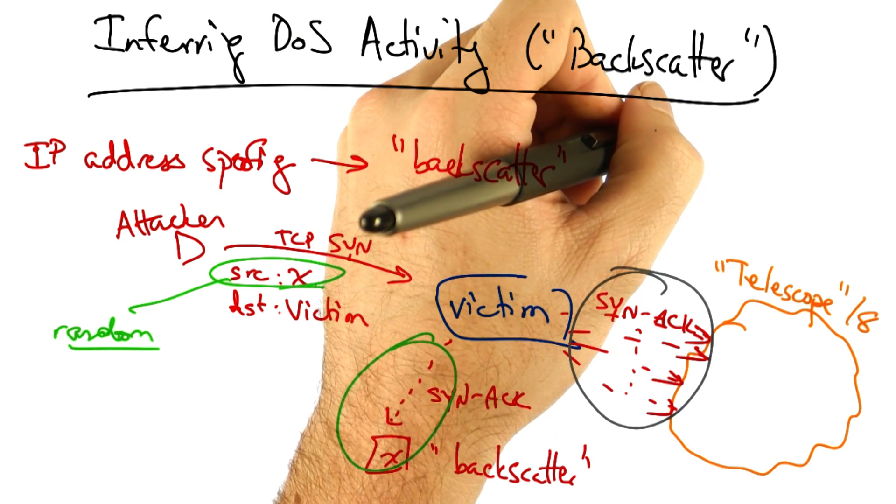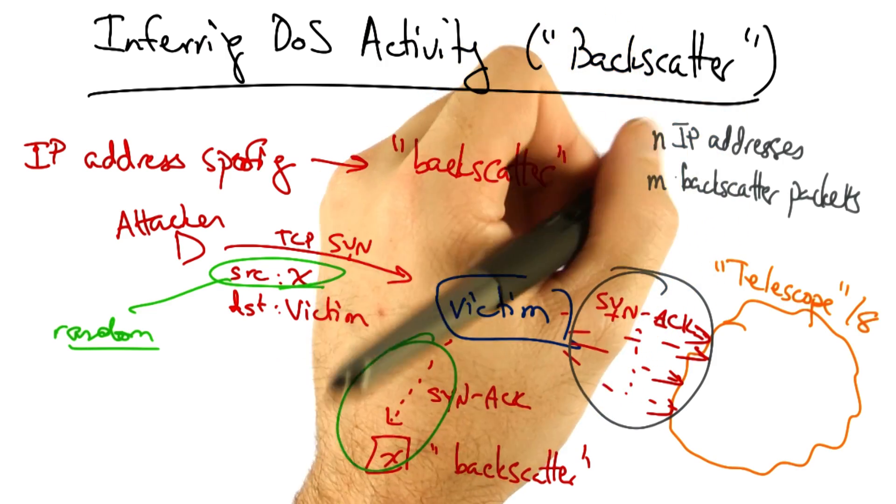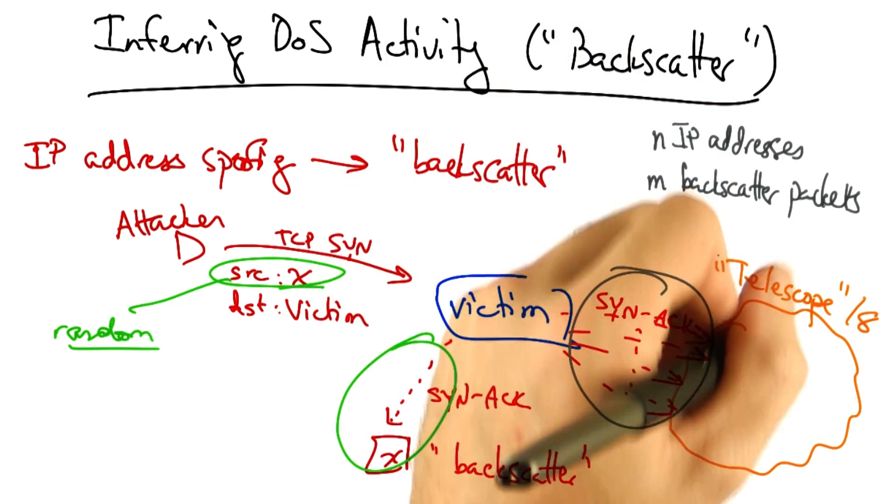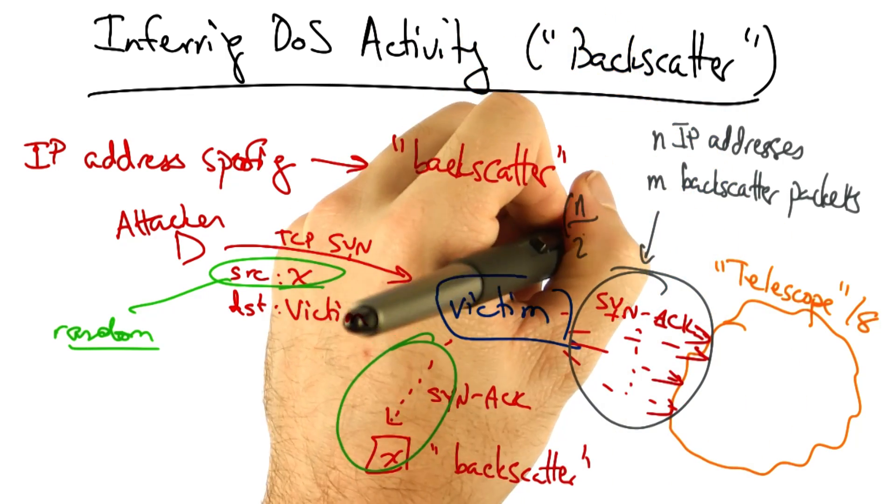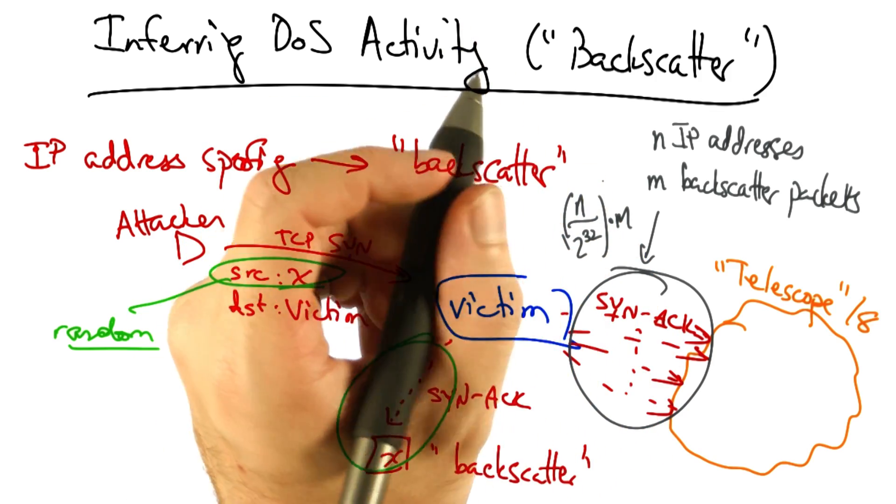So for example, if we monitor N IP addresses and we see M attack packets, then we expect to see here N over 2 to the 32 of the total backscatter packets, and hence of the total attack rate.